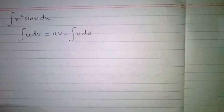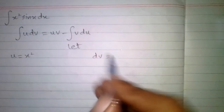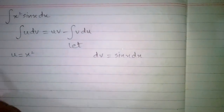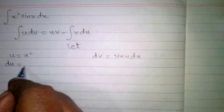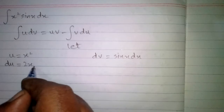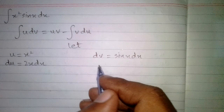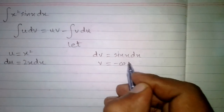Now we have to decide what u and dv are in this integral. We let u equal to x squared and dv equal to sin x dx. So the differential du is equal to the derivative of x squared, which is 2x dx, and v is the integral of sin x dx, which equals minus cos x.